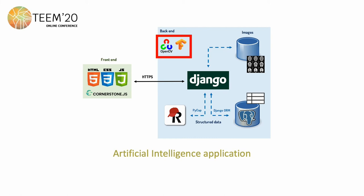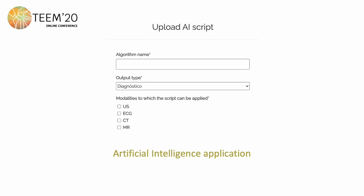The last main feature of the platform is the integration of artificial intelligence algorithms. This feature allows researchers to upload their AI scripts into the platform and make them available to other users. The platform provides an uploader to define the algorithm's metadata. Once uploaded, algorithms are available at the viewer component. The application process is straightforward: a button provides information about the available scripts for the current image, and the user only needs to select an algorithm and confirm their application. Depending on the algorithm's output type, a new image or text block will be shown with the result.